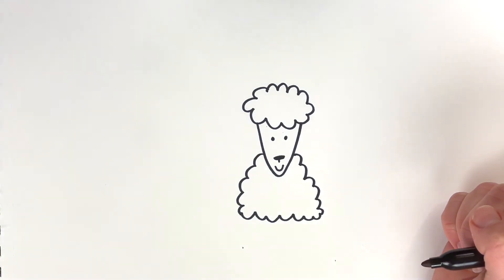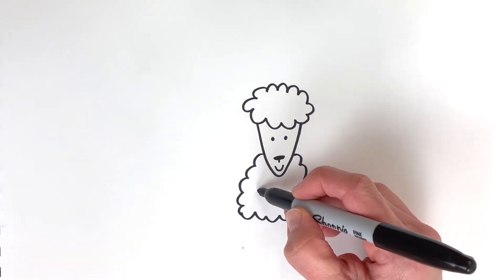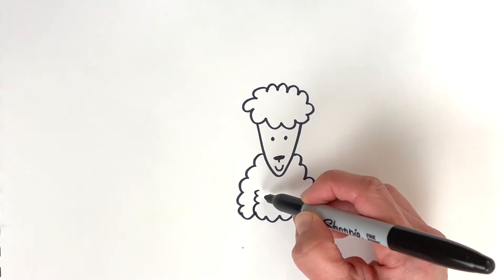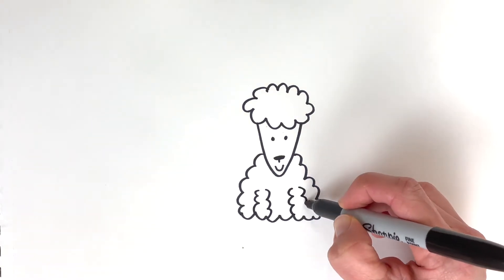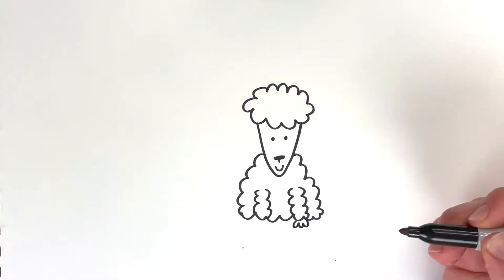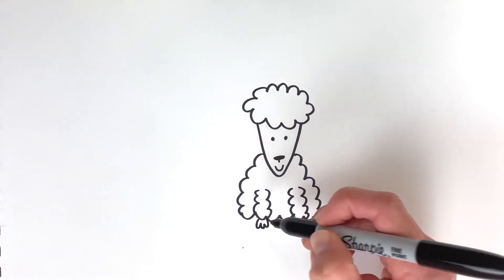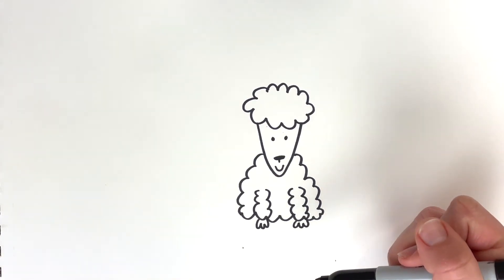And then let's do some little arms. So we'll do the same kind of thing, but instead of making a straight line, we're just going to make it cloudy. Like a cloud. And some little paws. There. Cute.